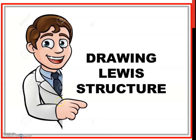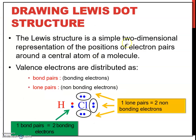Next, we go to the next sub-topic, which is how to draw Lewis structures. Lewis structure represents the position of electron pairs around the central atom of a molecule. From the Lewis structure, you can see the bonding pairs and lone pairs. For one bonding pair, represented by a line, it means there are two bonding electrons.